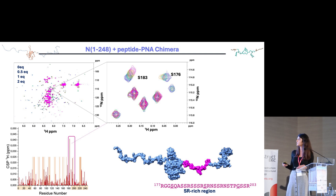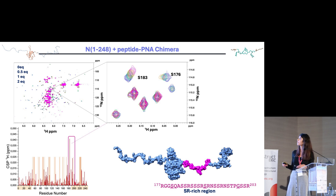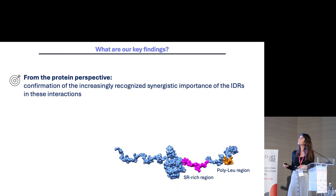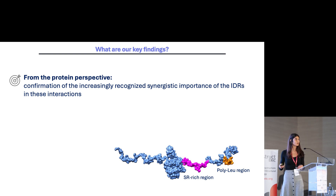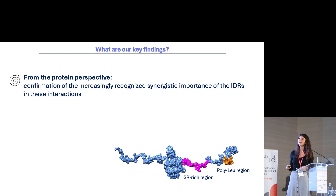The SR-rich region is rich in arginine, so it is highly positively charged, and it shows the highest chemical shift perturbation. The key finding from the protein perspective is confirmation of the important synergistic role of the intrinsically disordered regions in this kind of interaction.